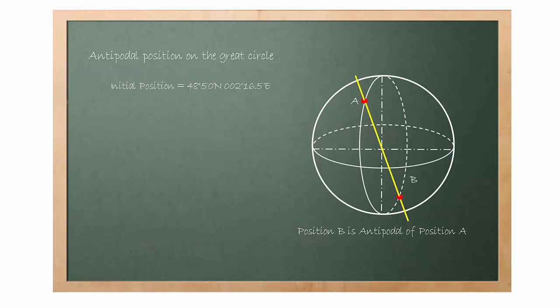As you can see from the diagram, antipodal position is 180 degree away, both in terms of latitude and longitude.